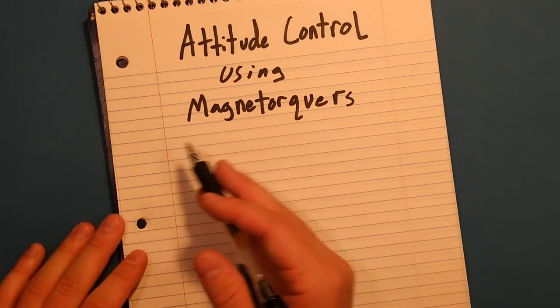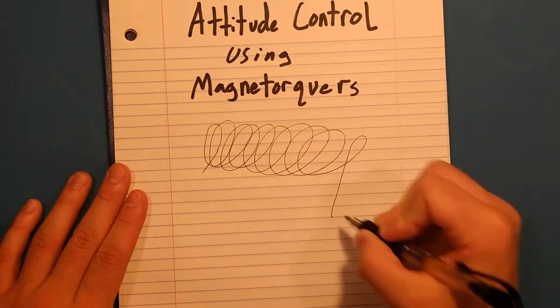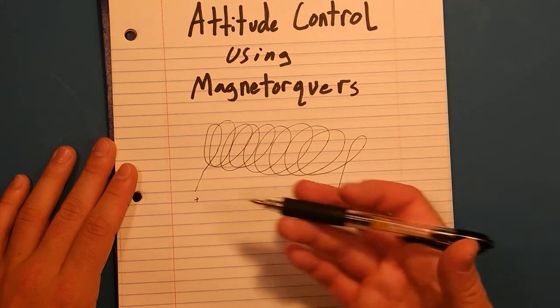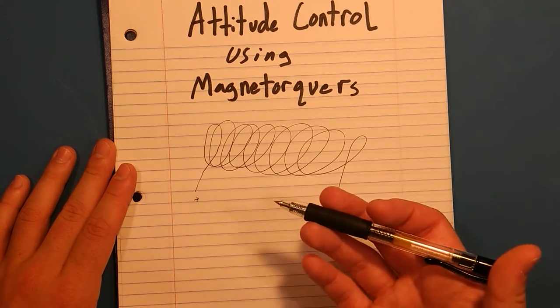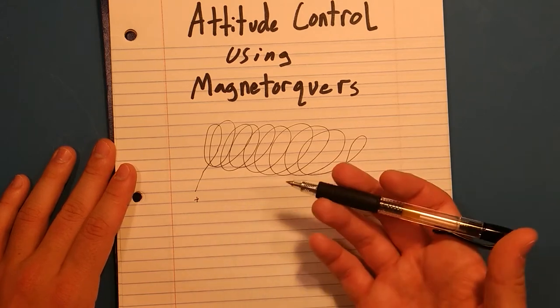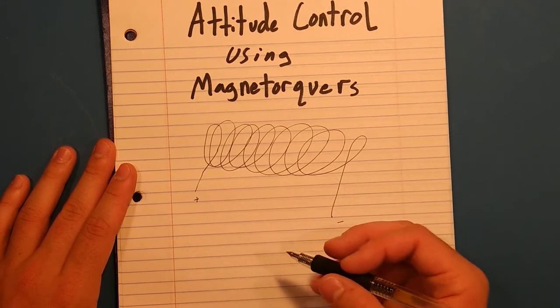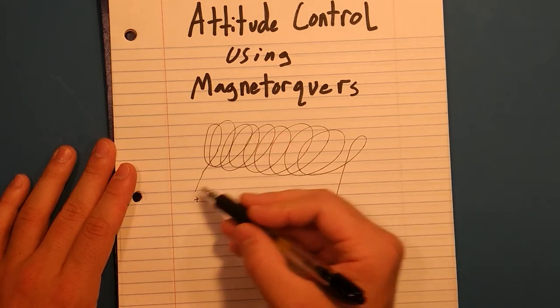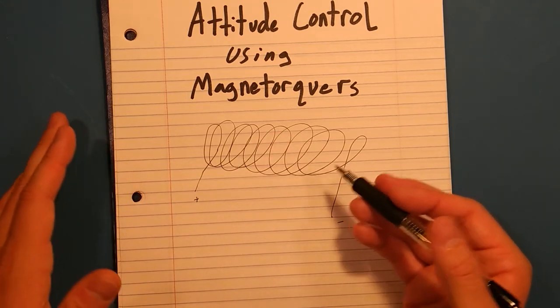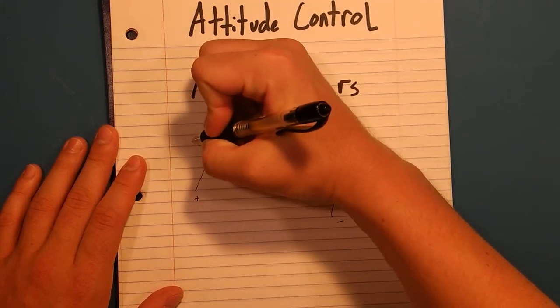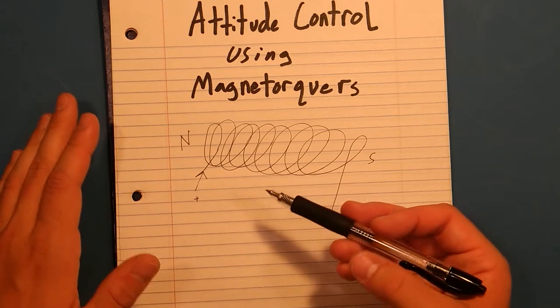So, what are magnetorquers? Essentially, magnetorquers are literally just a coil of wire wrapped around generally some sort of iron or ferrous core. And that's it. It is pretty much as simple as that, as a coil of wire that you have some positive voltage over here, and ground over here, and you have current flowing through this loop of wire, and this generates a magnetic dipole.